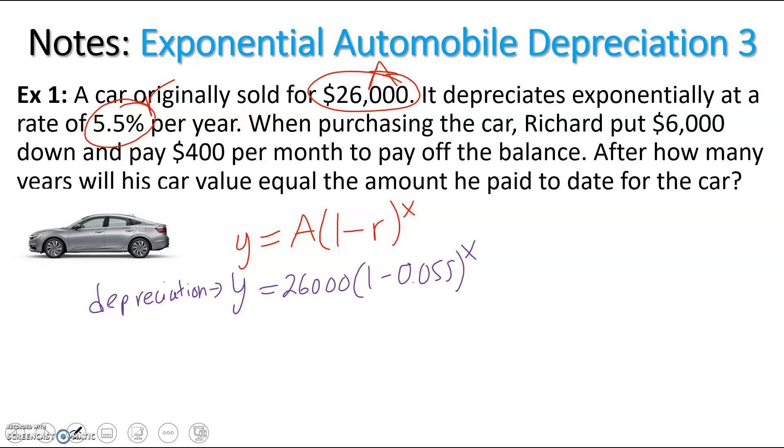Now Richard puts $6,000 down and pays $400 every month to pay off the balance. We're going to create our expense equation. The amount that he spent, y, is going to equal $400 per month, and $6,000.